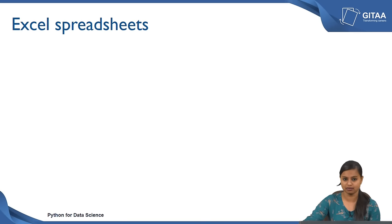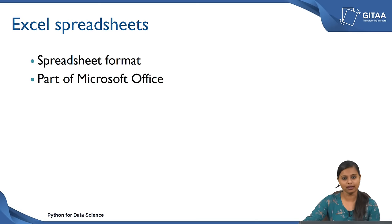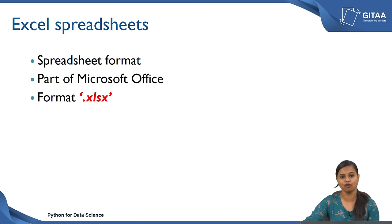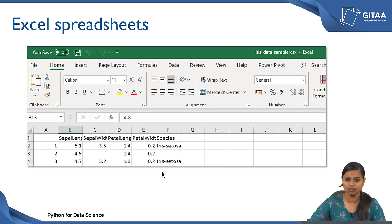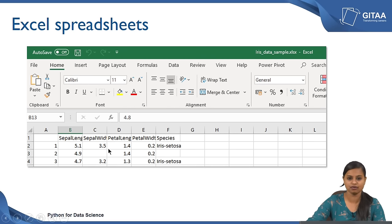Next we will move on to Excel spreadsheets. It is also a spreadsheet format and it is a part of Microsoft Office. If you have Microsoft Office on your machine then you will be able to work with Excel, and the format would be .xlsx. Whenever you save any spreadsheet with the extension .xlsx, that becomes an Excel spreadsheet. All the variables have been represented in terms of columns and all the samples have been represented in terms of rows.